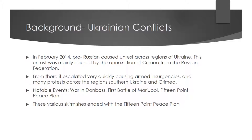41% of those participants were Crimean and in favor of a union. 33% were from Donetsk Oblast, 24% were from Luhansk Oblast, and another 24% were from Odessa Oblast in favor of a union. Crimea was one of the main areas that had the most problems.